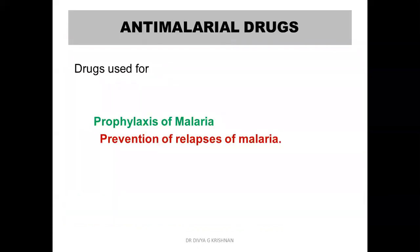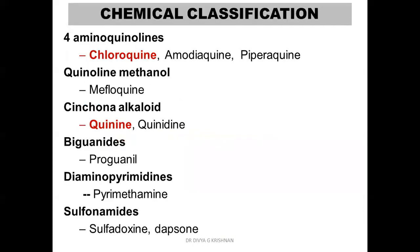Anti-malarial drugs are drugs used for prophylaxis of malaria, for the treatment of malaria, and for the prevention of relapses of malaria. We have two types of classification: chemical classification and therapeutic classification. This chemical classification you have to learn by heart — my suggestion is to learn the class names and at least one prominent example from each.